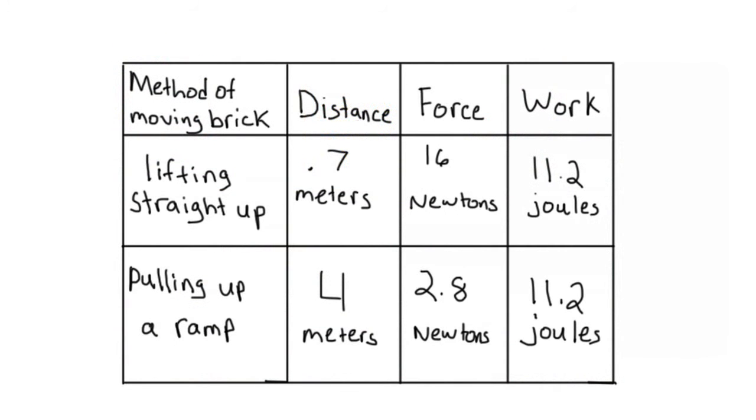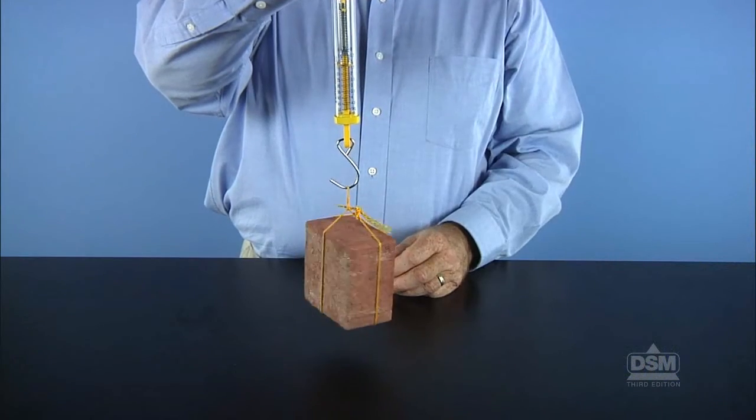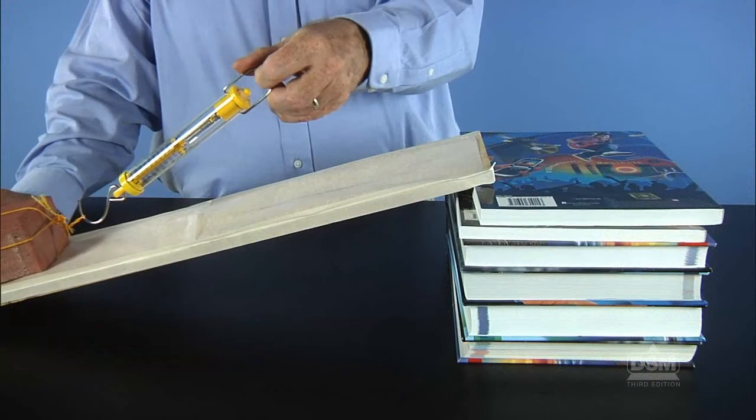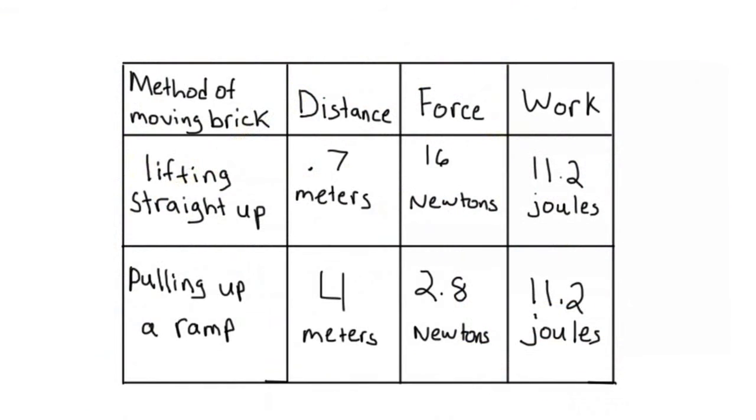Instruct students to study the chart and to compare the distance the brick traveled in each case with the force required to lift it. Students should realize that when the brick was lifted straight up, more force was exerted over a shorter distance. Conversely, when the brick was pulled up an inclined plane, less force was exerted over a longer distance.